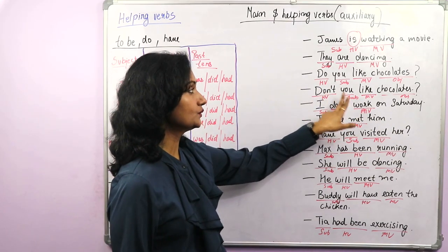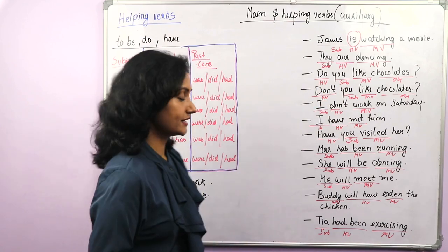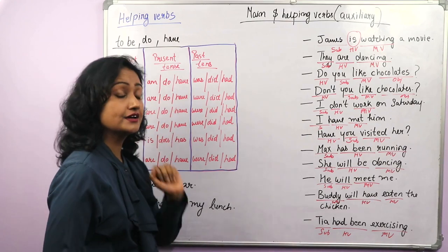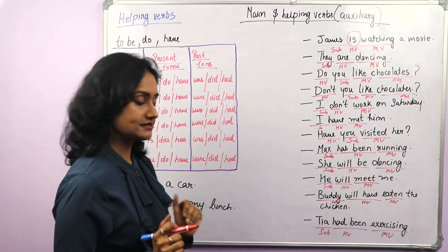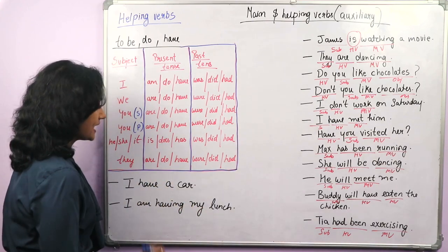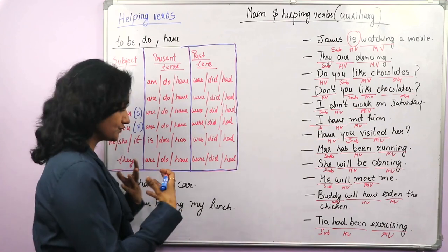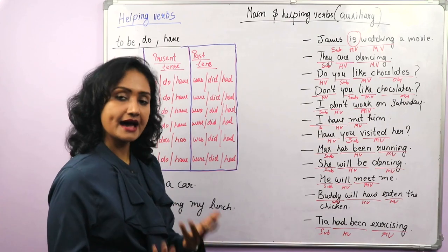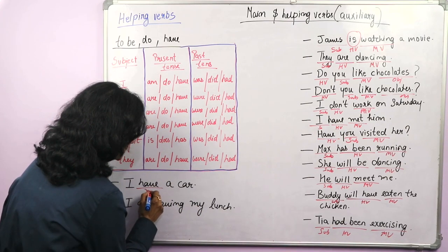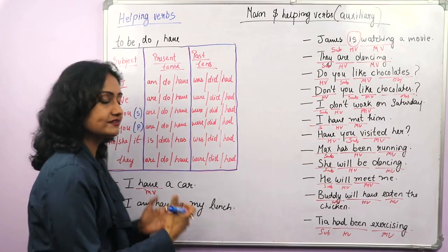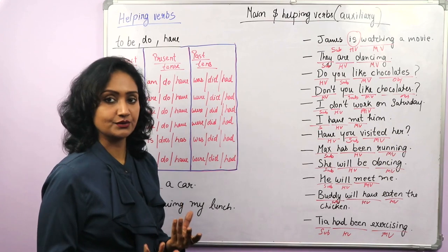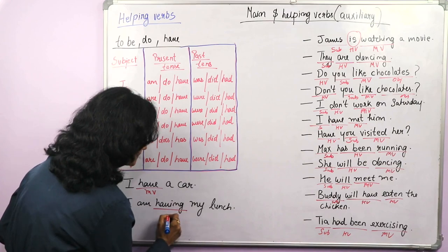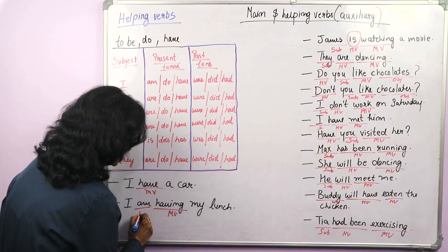In sentences like I don't, don't you, do I — do is used as a helping verb. Now for have as a main verb: 'I have a car' — here have means that you own a car; it shows ownership, so have is a main verb here. 'I am having my lunch' — having means eating; have is the main verb and am is the helping verb.